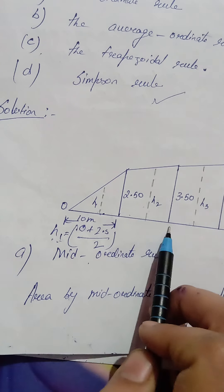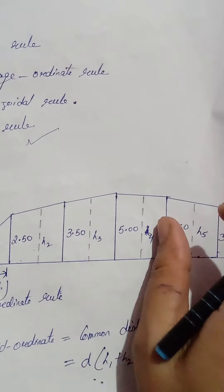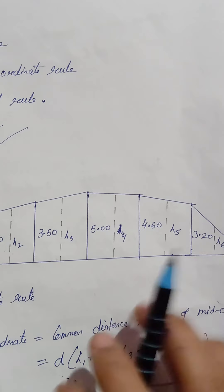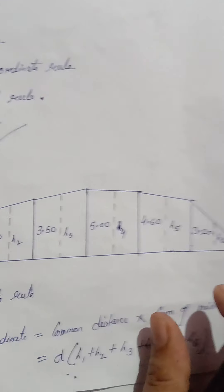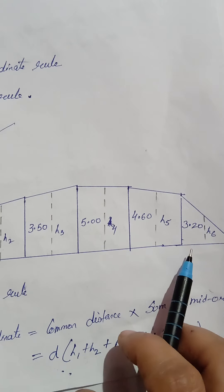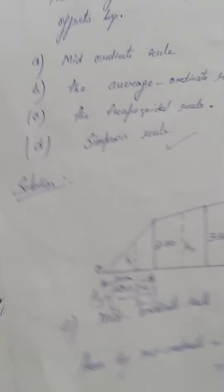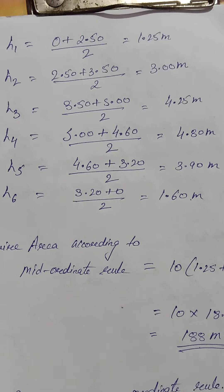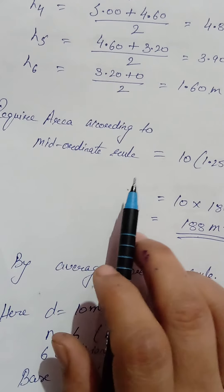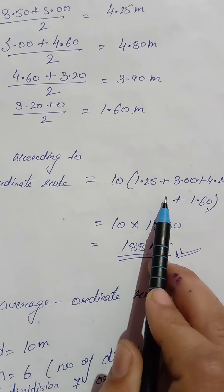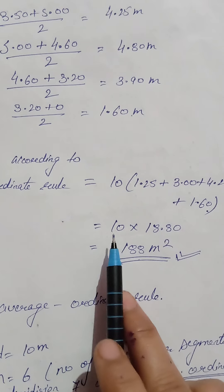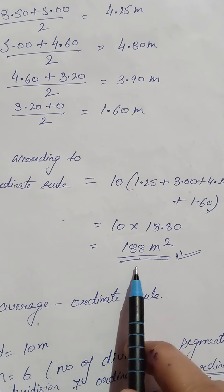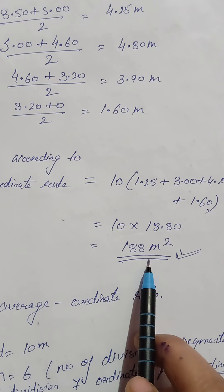First, by the mid ordinate rule. As you know, the formula for mid ordinate rule — discussed in the last lecture — is: common distance into sum of mid ordinates. Here we are given the ordinate values, not the mid ordinates, so we have to find the mid ordinates. We denote them h1, h2, h3, h4, h5, and h6. The common distance D is 10 meters.